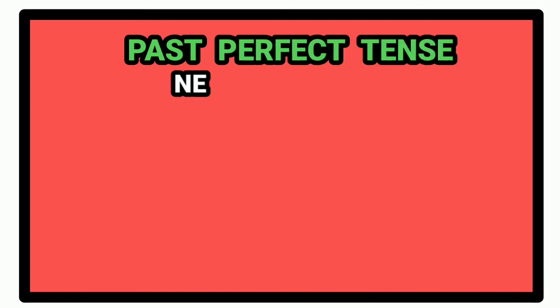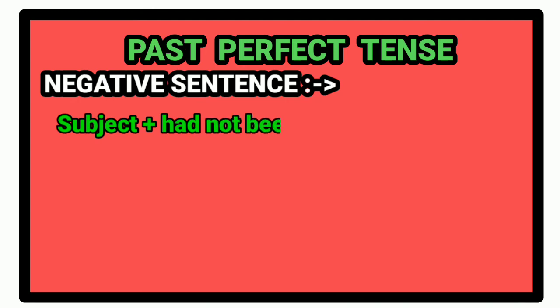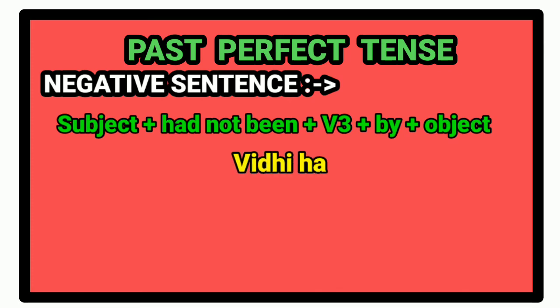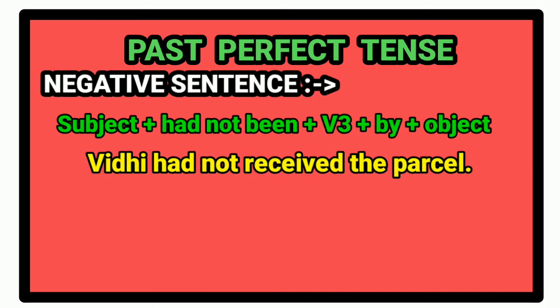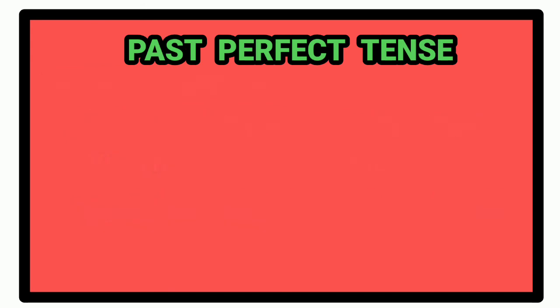Next is past perfect tense. Rule for negative sentence is: first of all, write subject. After that, write had not been. Then the past participle form of the given verb. Then the preposition by. And after that, we write the object of the sentence. For example, Vidhi had not received the parcel. The passive voice will be: the parcel had not been received by Vidhi.